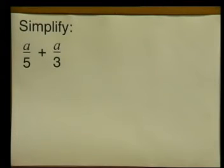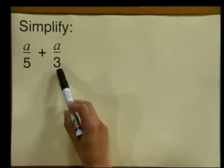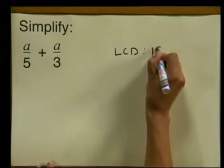Now with this in mind, let's move on to adding fractions. Simplify a divided by 5 plus a divided by 3. Now do you remember our example in the previous lesson? We also had fractions with denominators of 5 and 3, and we saw that the lowest common denominator was 15. Remember, we can only add fractions if we have the same denominator — in other words, fractions that are alike. And that is why we need to find our lowest common denominator.